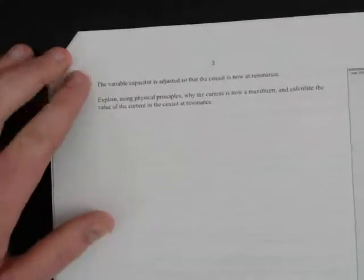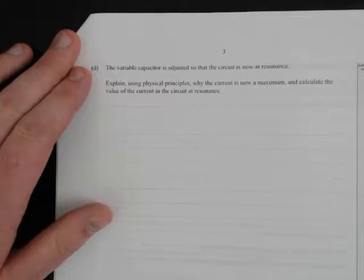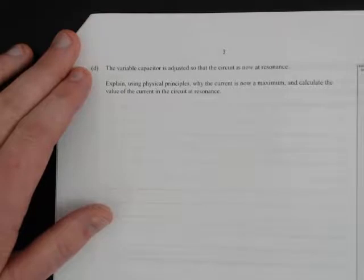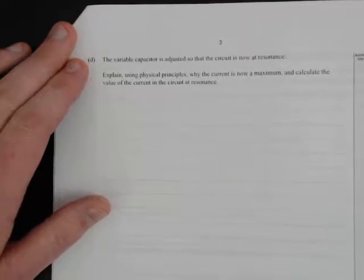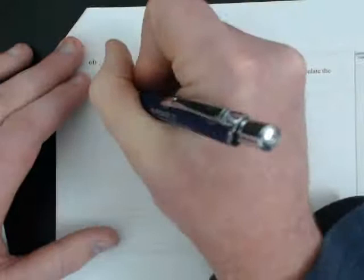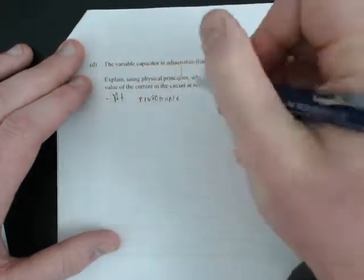Question four: The variable capacitor is adjusted so the circuit is now at resonance. Explain using physics principles why the current is now maximum and calculate the value of the current in the circuit at resonance.